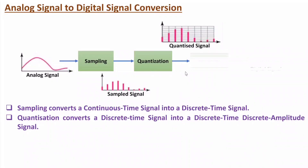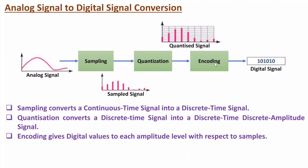The third step is encoding. By encoding, we represent these amplitudes in terms of digital values. So to convert an analog signal into a digital signal, the three essential steps are: sampling (continuous time to discrete time), quantization (amplitudes become discrete), and encoding (assigning digital values to each sample to produce digital data).